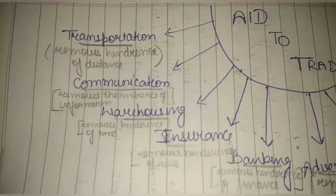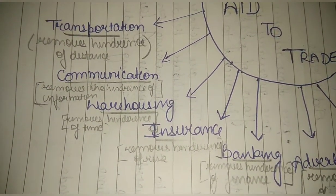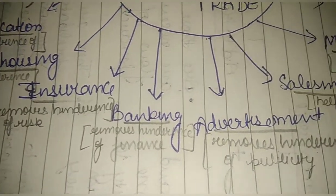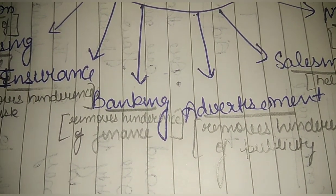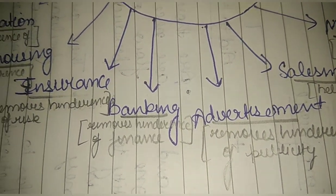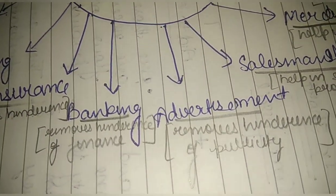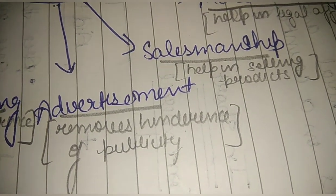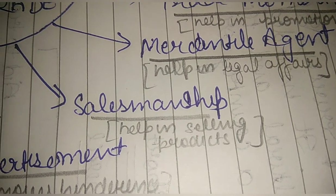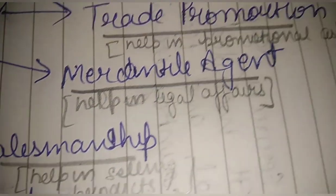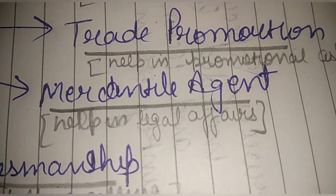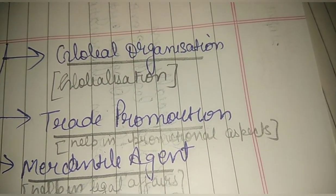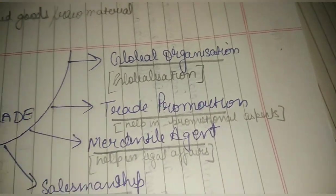Warehousing removes the hindrance of time. Insurance removes the hindrance of risk. Banking removes the hindrance of finance — you can get loans and deposit your money. Advertisement removes the hindrance of publicity. Salesmanship helps in selling products. Mercantile agents help in legal affairs. Trade promotion helps in promotional aspects. Global organizations help in globalization.